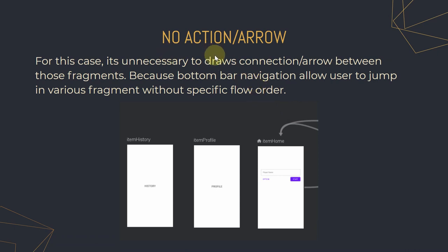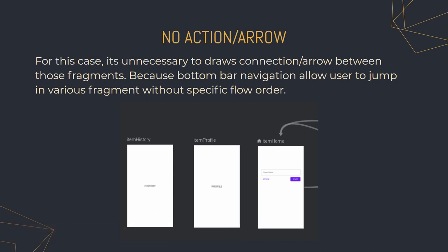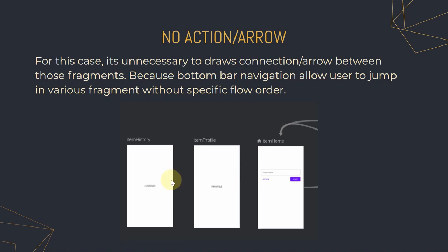No need to draw action arrows between the three destinations. When using bottom navigation, users can jump between fragments in any order without a specific flow. They can go from home to profile, to history, and back to home freely. You would only need arrows if a button inside a fragment navigates to another specific fragment. In this case, since these fragments just display labels, no arrows are needed.